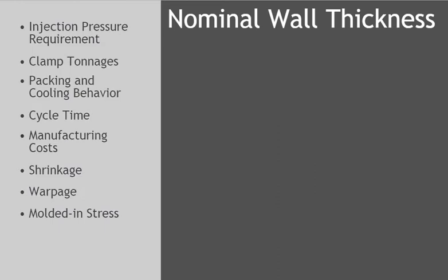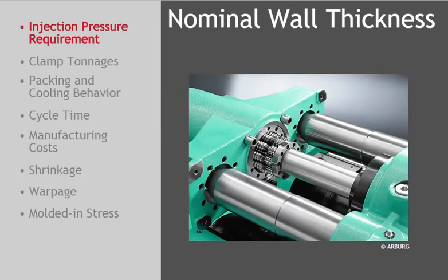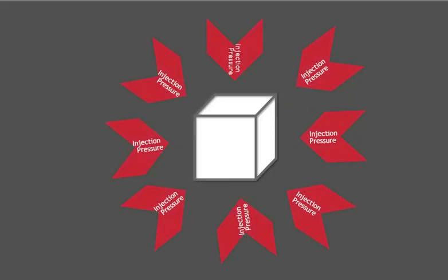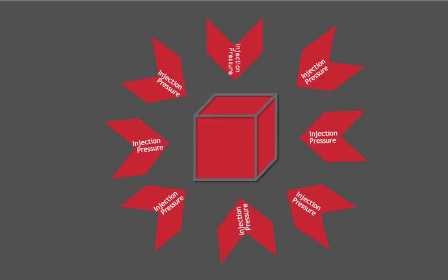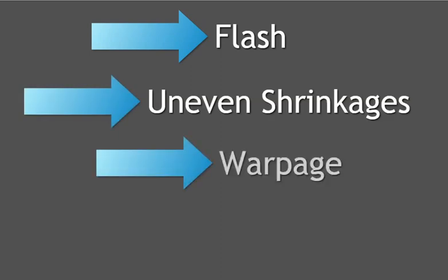Let's look at injection pressure requirements as one factor. Although most modern molding machines can generate injection pressure of 30,000 psi or higher, it is generally not ideal to max out the machine's capabilities. When injection pressure is too high, the internal forces inside the mold are also high, so higher clamp tonnages are required to keep the mold closed. This can result in unfavorable results such as flash or uneven shrinkages, as well as part warpage.